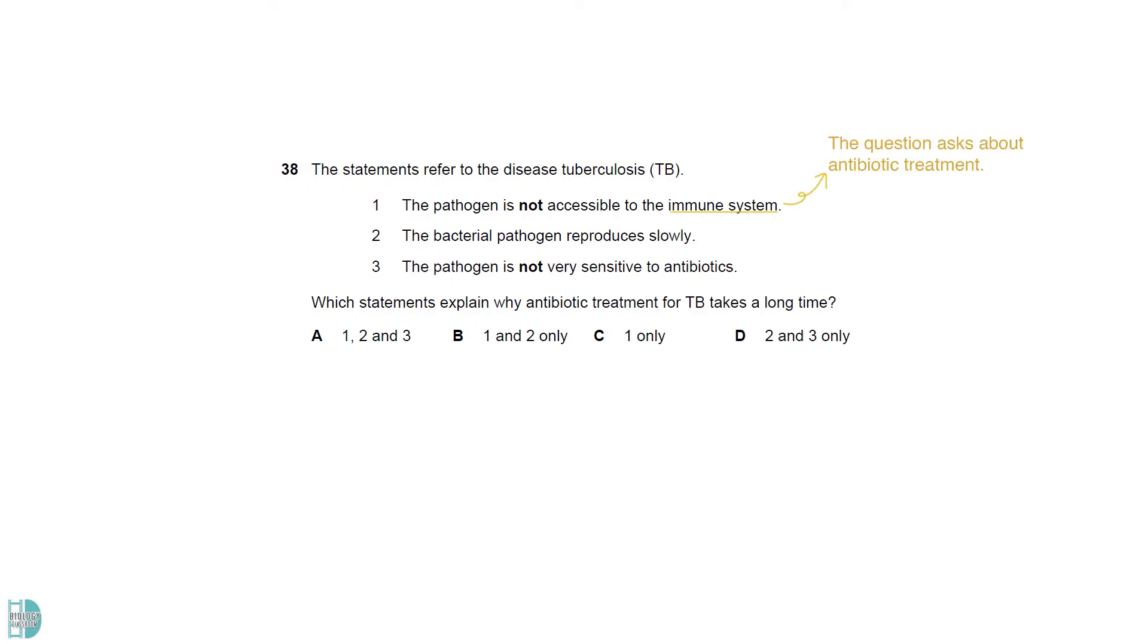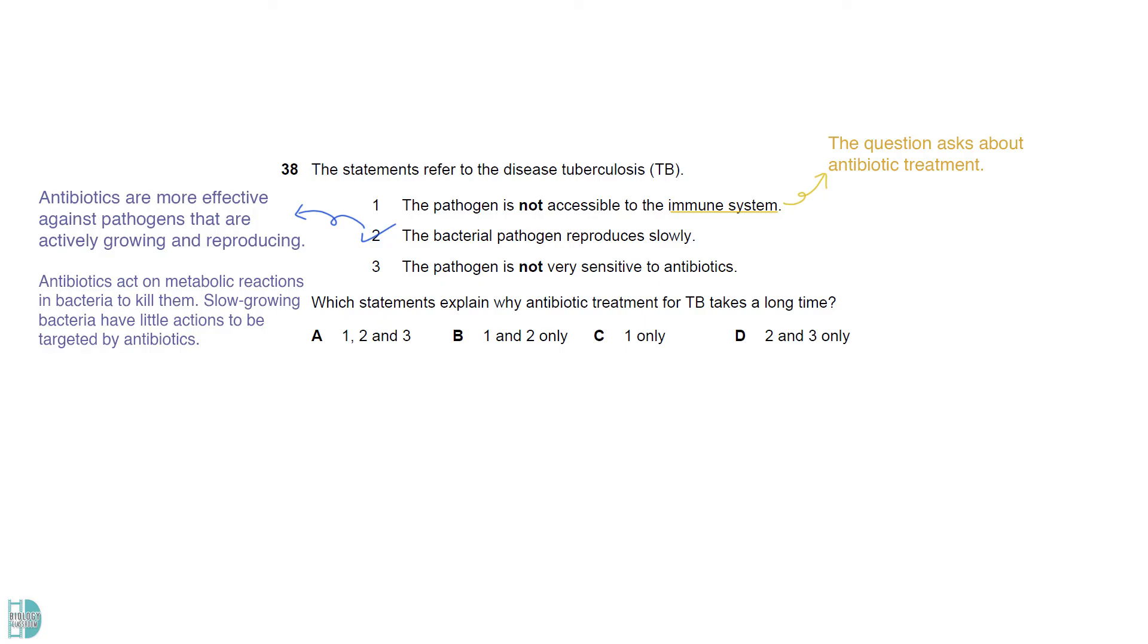Statement 1 is about the immune system. It is irrelevant to the question, which is about antibiotics. 2 is correct as antibiotics are more effective against pathogens that are actively growing and reproducing. Antibiotics act on certain metabolic reactions in bacteria, leading to their death or causing them to stop growing. Slow growing bacteria have little actions which can be targeted by antibiotics. 3 is true. Many strains of mycobacterium have already developed resistance towards some kind of antibiotics causing a reduction in their effectiveness.